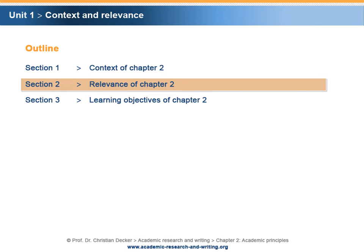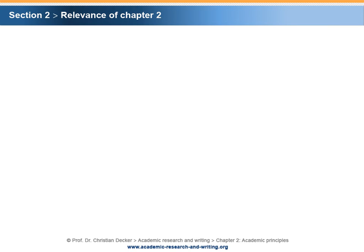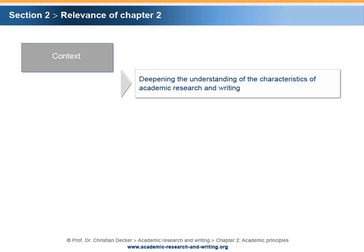Section 2 – Relevance of Chapter 2. In the previous chapter, a basic understanding of academic research and theory in practice has been developed. The next step is to come up with a more structured and systematic approach to qualify academic research and thereby scientific work. Therefore, the context of this chapter is to deepen our understanding of the characteristics of academic research and writing.